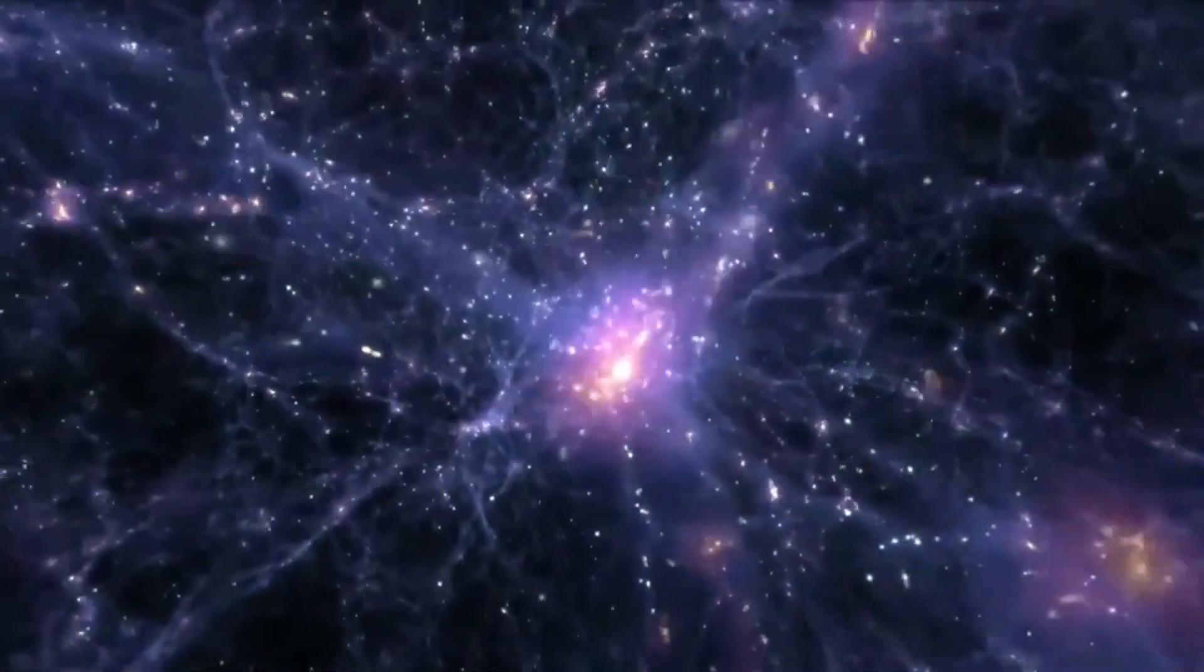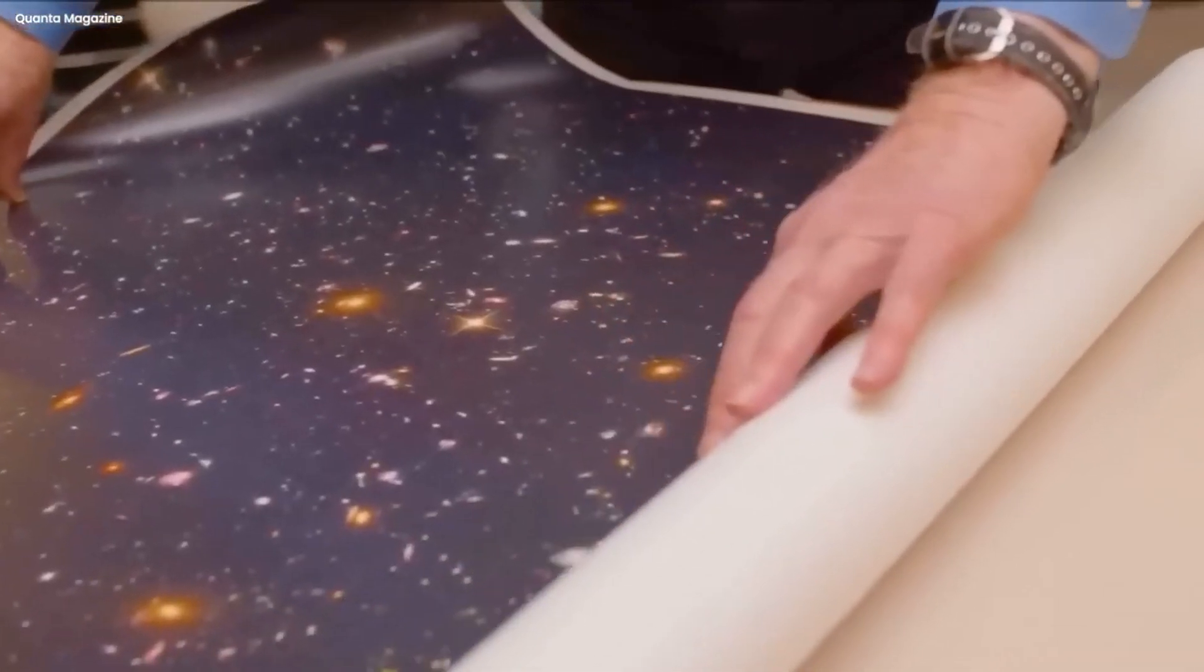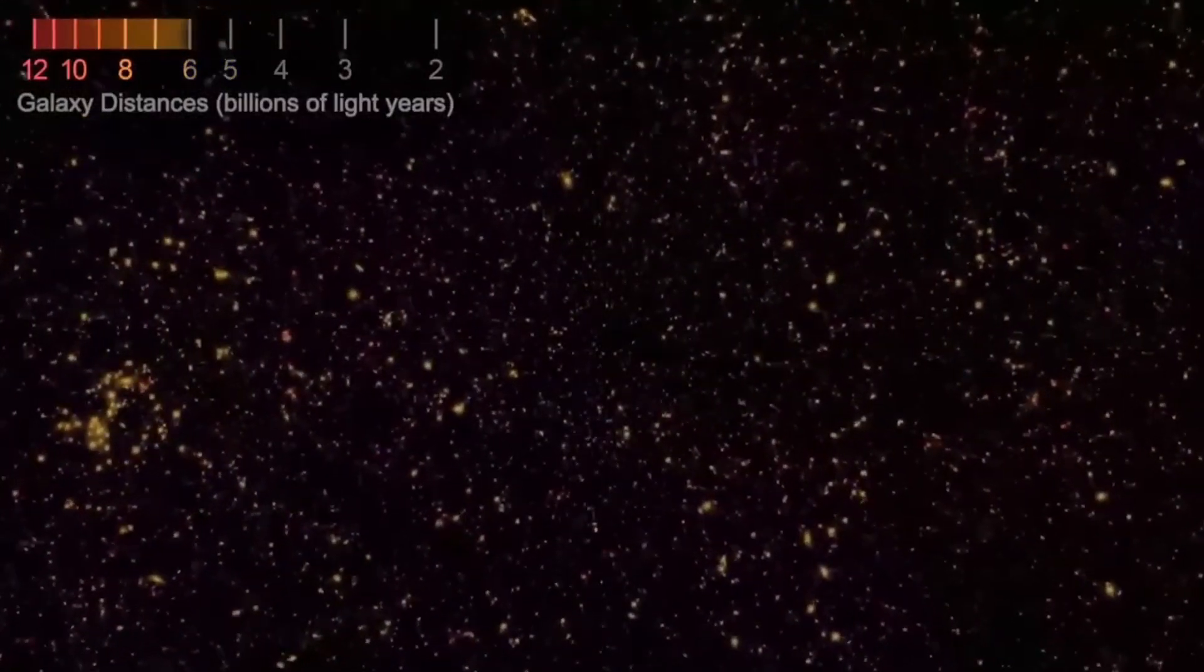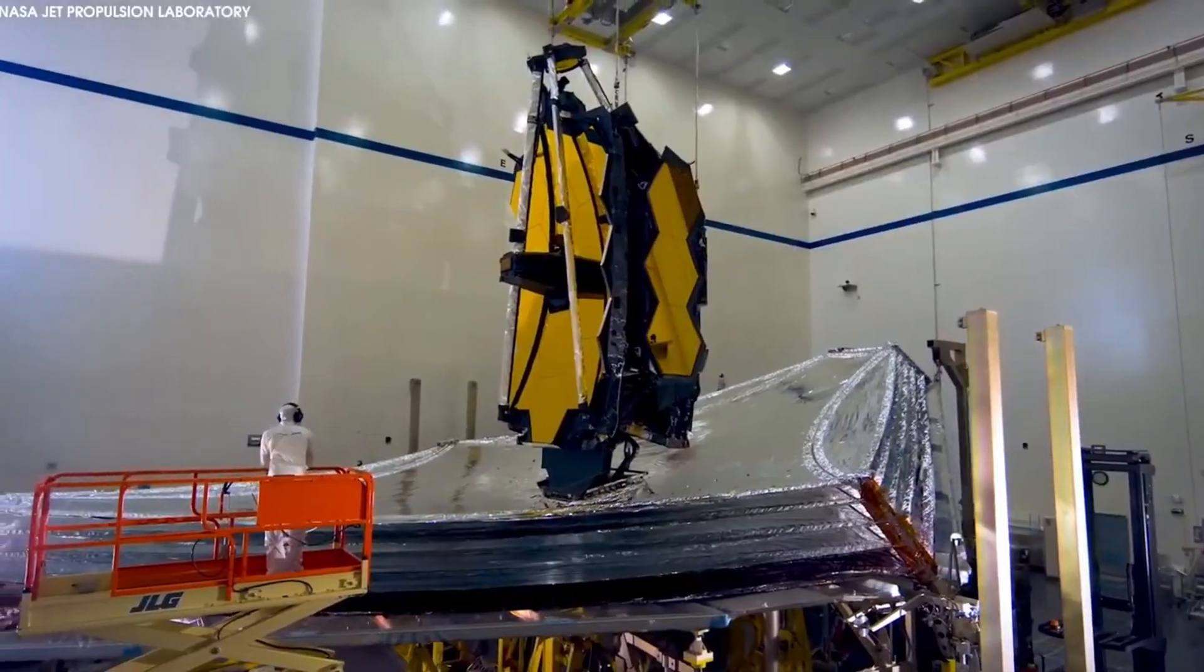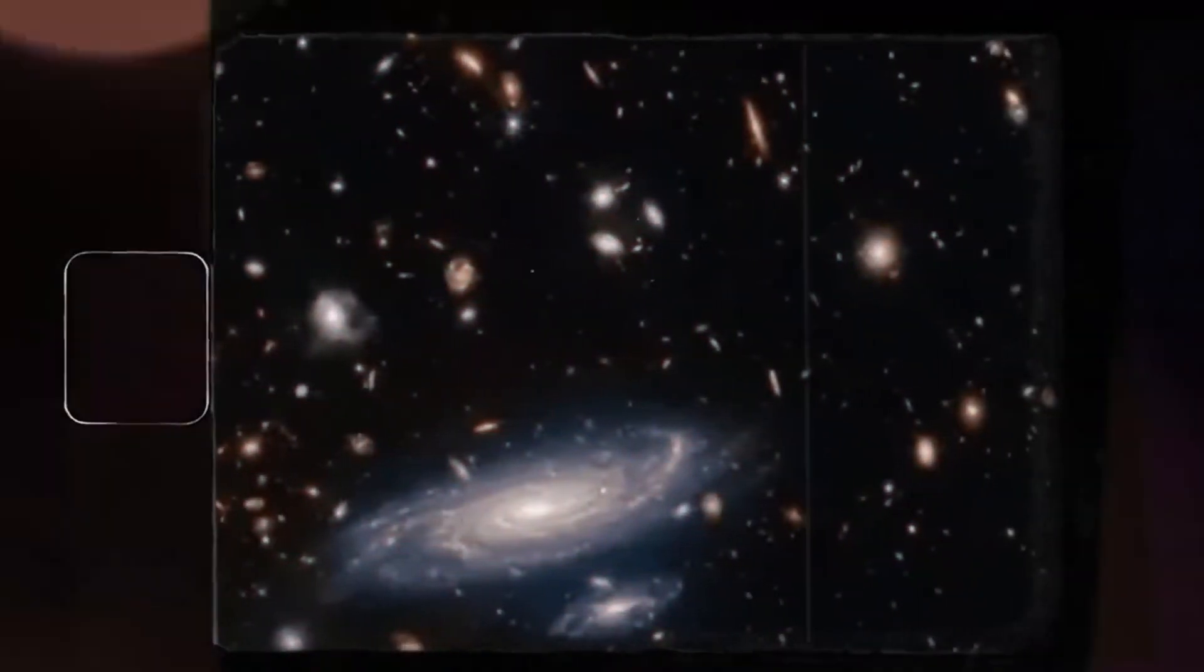When you look at the moon, you actually see it as it was 1.3 seconds ago. It's only a tiny peek back in time, but it's still the past. It's the same with sunlight, except the photons, light particles, emitted from the sun's surface travel just over eight minutes before they finally reach Earth.